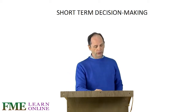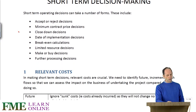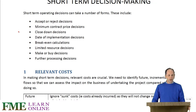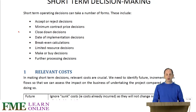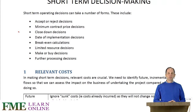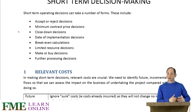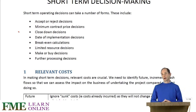If we look at the material here, we can see that questions in this area might include whether or not to accept or reject certain possibilities. It might look at the minimum price that we need to charge on a contract to make it viable. It might be looking at whether or not to keep a certain division or department open or to close it down, or to decide when to implement a certain project.